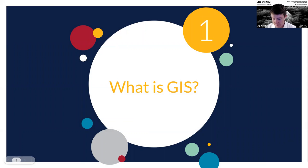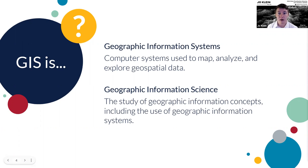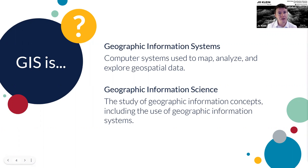What is GIS? There are two definitions wrapped up within the term GIS. A GIS, or a geographic information system, is a computer system used to map, analyze, or explore data linked to a place or location — also called geospatial or spatial data. GIS can also refer to geographic information science, not systems, which is the more general study of geographic information concepts, including geospatial mapping, analysis, and exploration using geographic information systems.